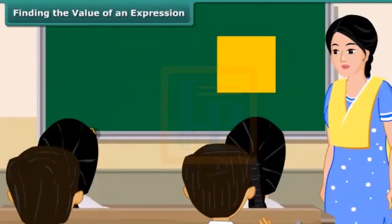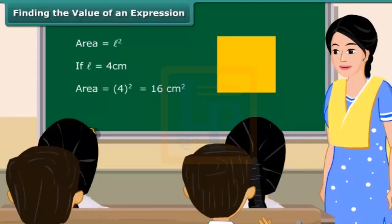See this square? It has an area equal to L square. If the value of L is equal to 4 cm, then what would be the area of this square? That's right, it would be 16 cm square. So, children, there are a number of situations in which we need to find the value of an expression.